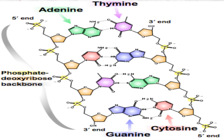Let's refresh our memory about a strand of DNA. The sides are made of phosphate and the sugar deoxyribose, and then the nucleotides are C for cytosine, G for guanine, T for thymine, and A for adenine.